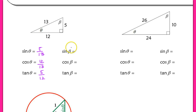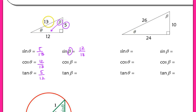Now when I switch viewpoints and look at angle beta — the other acute angle of this triangle — the opposite here would be 12, so I have 12 over 13 for sine of beta. The adjacent now is 5, so 5 over 13 would be the cosine. And the tangent of beta would be the opposite 12 over my adjacent 5.